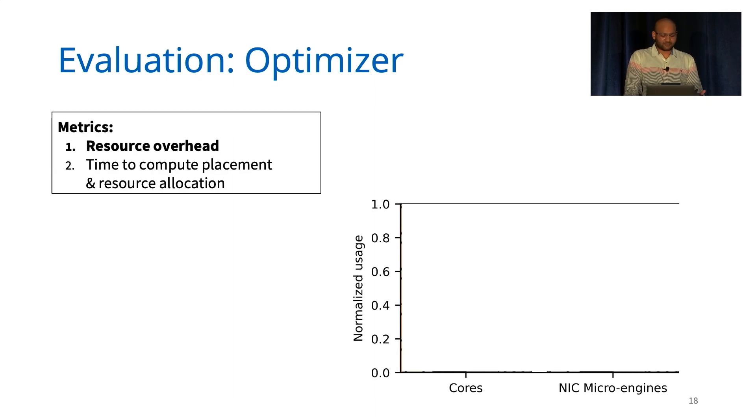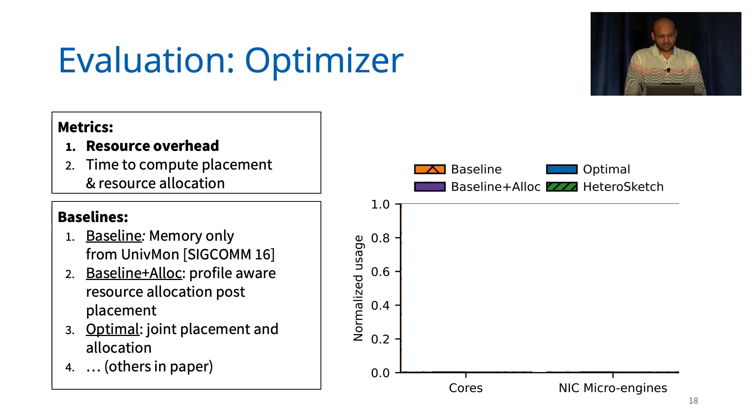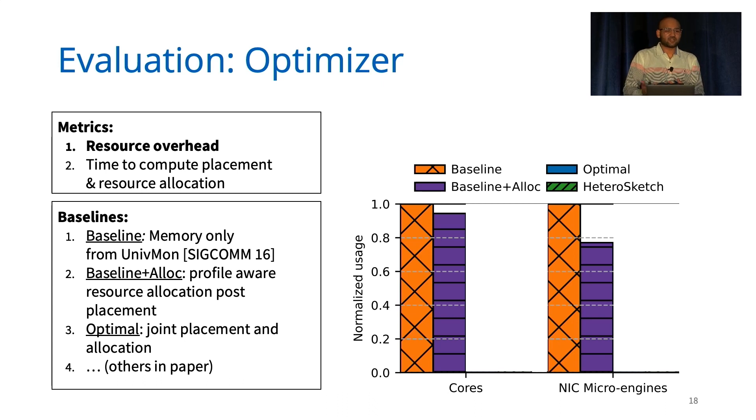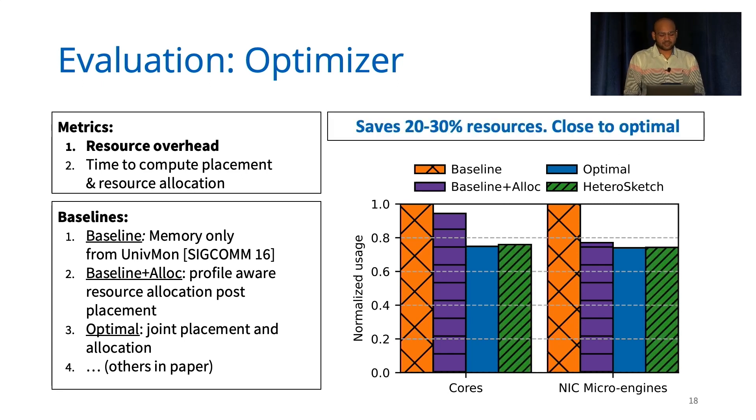For the optimizer, we mainly study improvement in the resource usage for monitoring, as well as the time to compute our placement and allocation decisions. We consider a number of baselines to compare our work against. First, we consider a scheme that only uses memory constraints to decide which devices should hold which sketches. This is similar to the prior work called Unimon from Sigcomm. The second baseline on top of Unimon uses profiling-aware resource allocation after the placement has already been decided by the baseline. Optimal is a scheme that uses the same formulation as HeteroSketch, that is our work, but does not use the clustering heuristic. We find that our profile-guided optimizer is able to reduce resource overheads by 20% to 30% compared to our baselines. And it produces solutions which are close to optimal despite using the clustering heuristic.